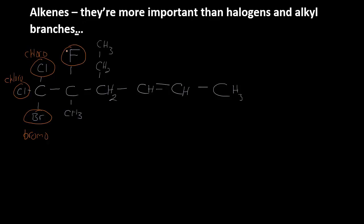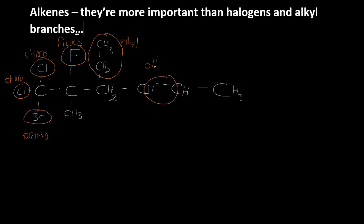See how I'm not even worrying about the numbers yet? F is going to be fluoro. This CH2-CH3 group is going to be ethyl. And this double bond here is an alkene. I also forgot there's a methyl group on the carbon with the fluorine — I'll circle it later.